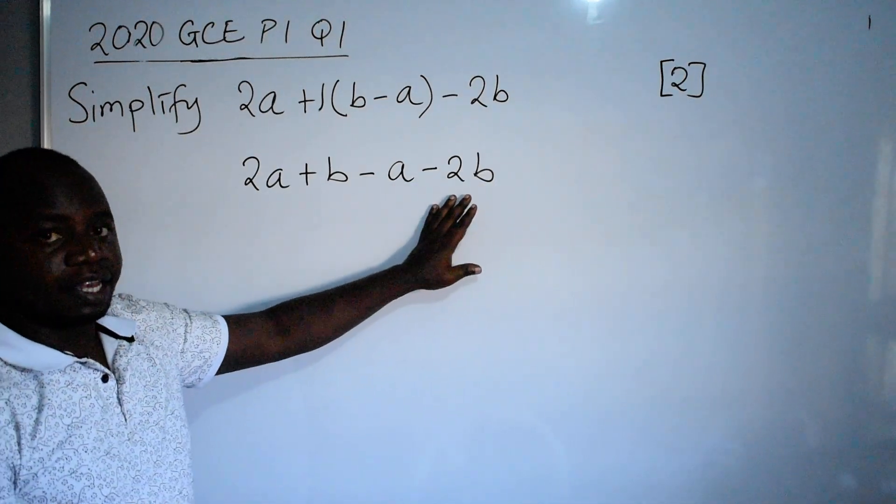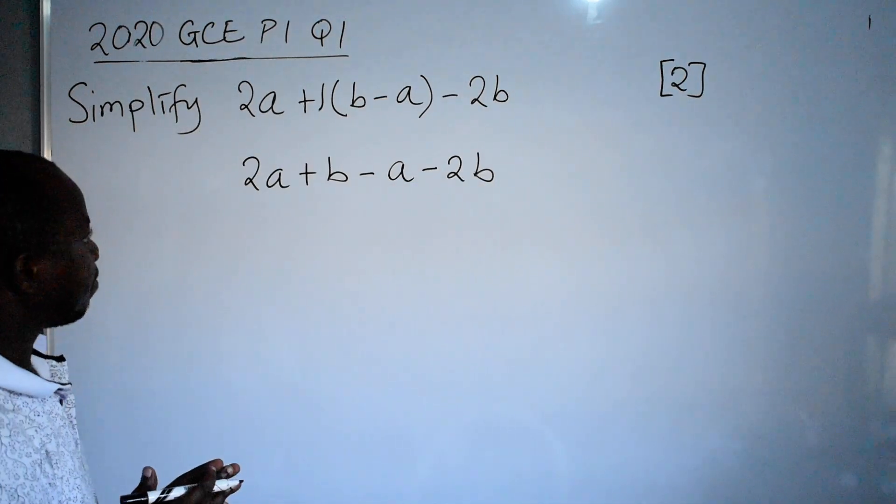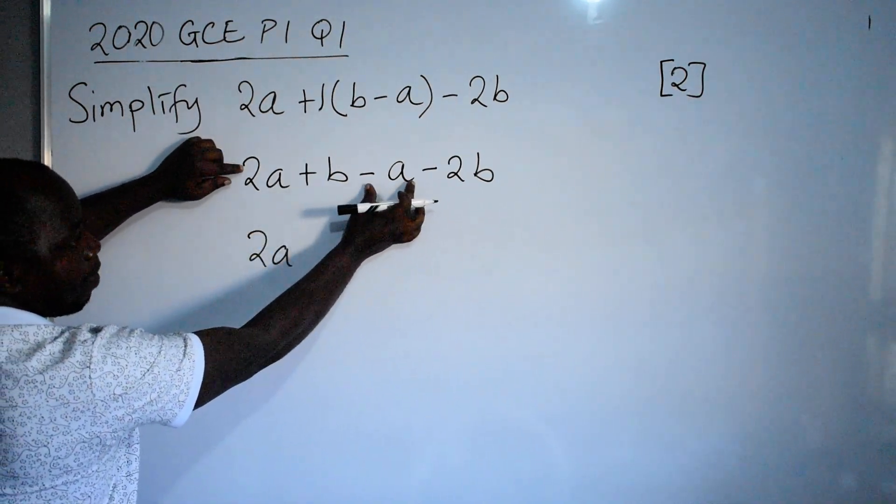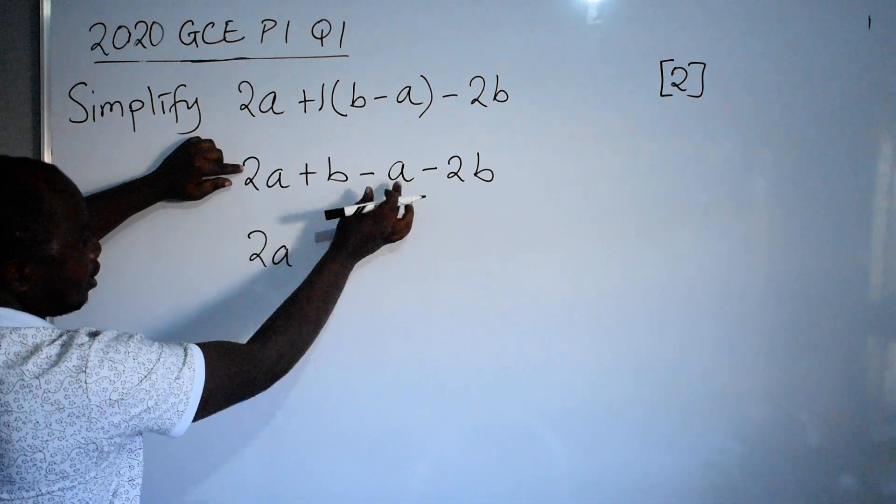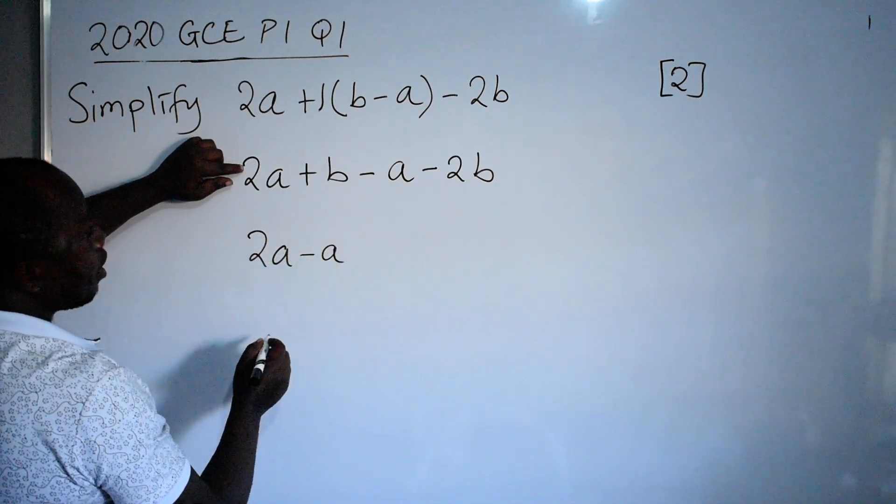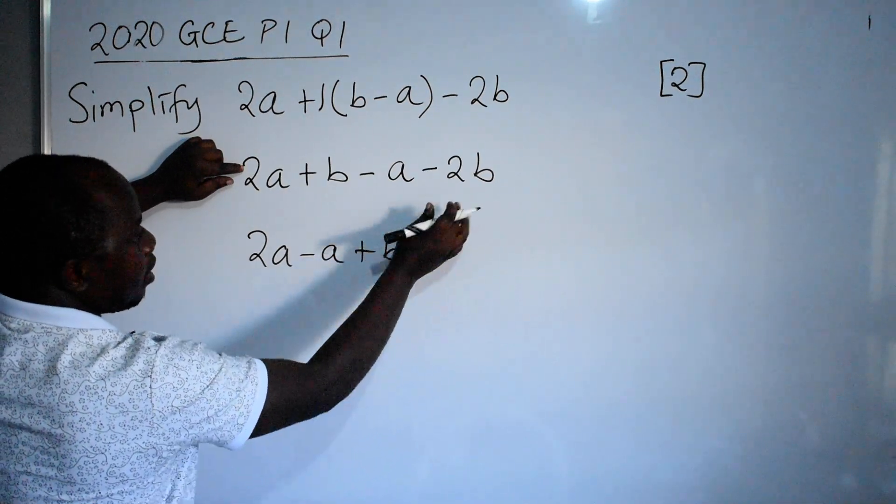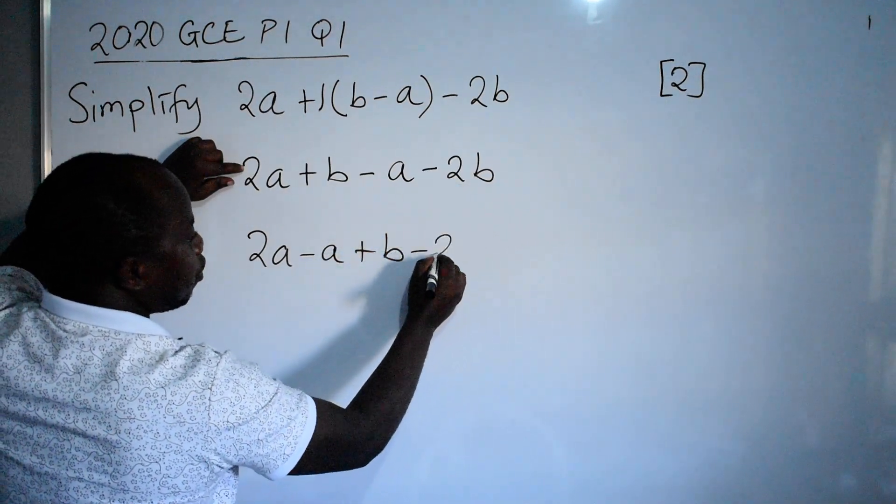This stage here is about collection of like terms. I am going to say 2a, where is the pair? The pair is here. So you get this, negative a. Then we have plus b. Plus b. The pair is here, minus 2b.